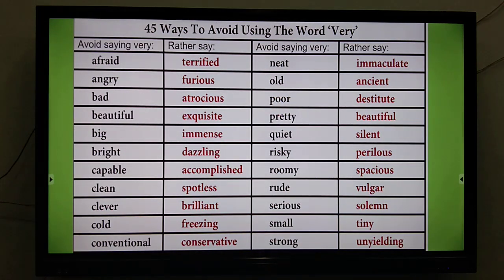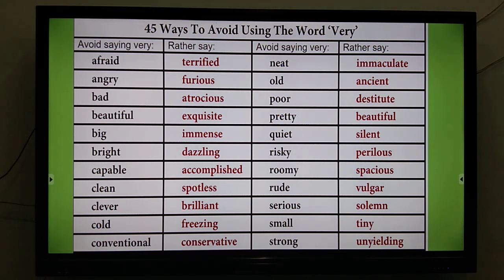Whenever you want to say 'very afraid,' 'very angry,' here is a list to help you avoid overusing 'very.' Instead of 'very afraid,' say 'terrified'; for angry, 'furious'; for bad, 'atrocious'; for beautiful, 'exquisite'; for big, 'immense'; for bright, 'dazzling'; for capable, 'accomplished'; for clean, 'spotless'; for cold, 'freezing'; for neat, 'immaculate'; for old, 'ancient'; for poor, 'destitute.'